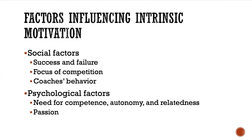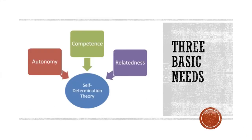We also have psychological factors. We'll talk about the need for competence, autonomy, and relatedness. If we have passion, we are most likely to be more intrinsically motivated in activities we love. Self-determination theory describes three basic psychological needs: autonomy — the need to feel like you made your own decisions; competence — feeling self-sufficient and confident in your skill; and relatedness — a feeling of belonging in a group and feeling connected to other people.